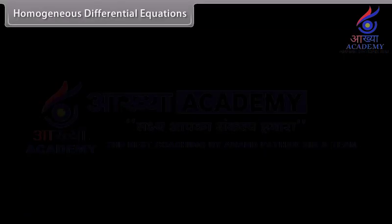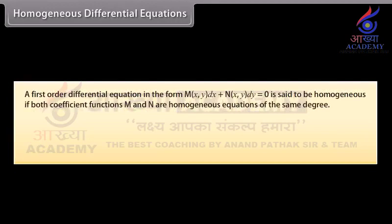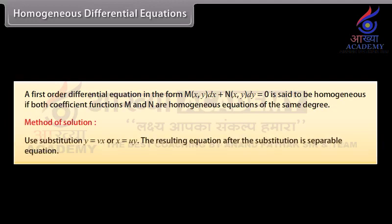Homogeneous differential equations. A first-order differential equation of the form M(x,y)dx + N(x,y)dy = 0 is said to be homogeneous if both coefficient functions M and N are homogeneous equations of the same degree. Method of solution: use the substitution y = vx (or x = uy), after which the resulting equation becomes a separable equation.